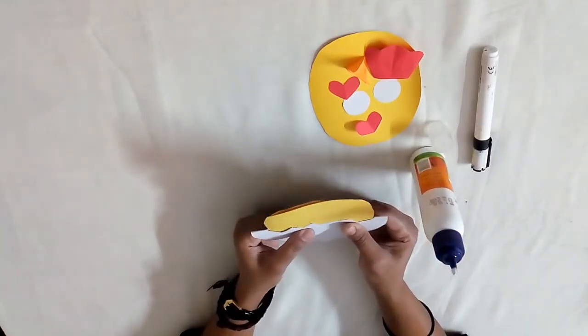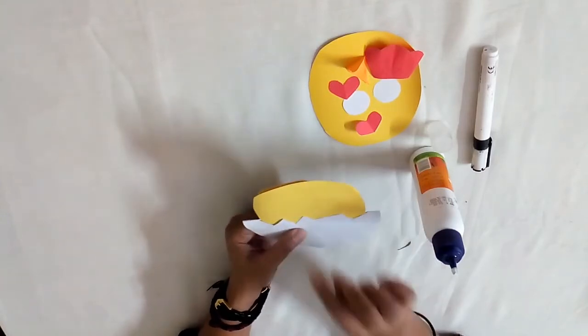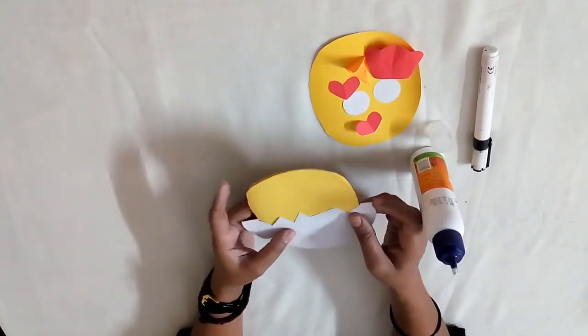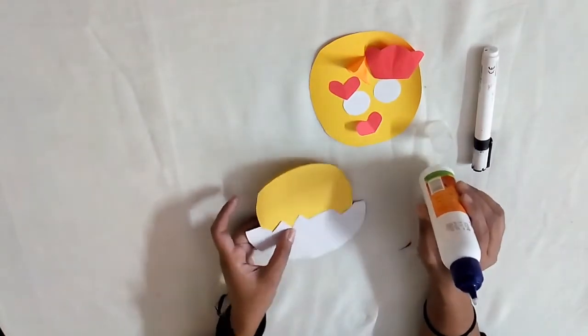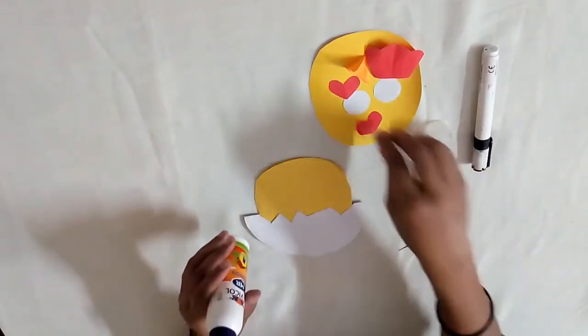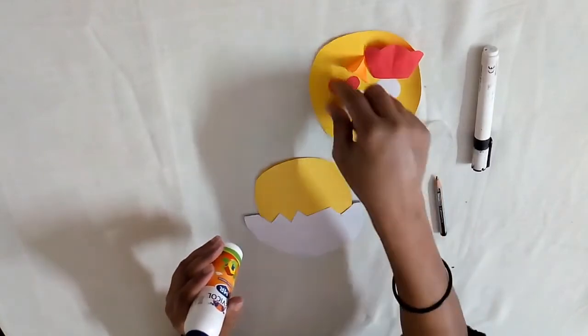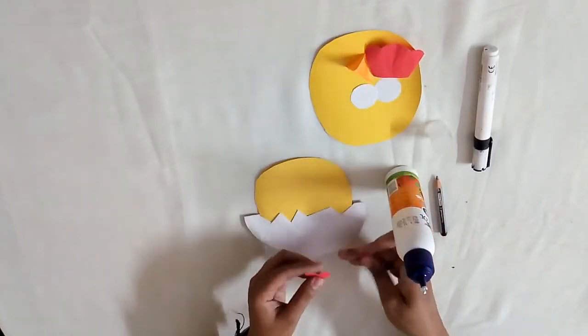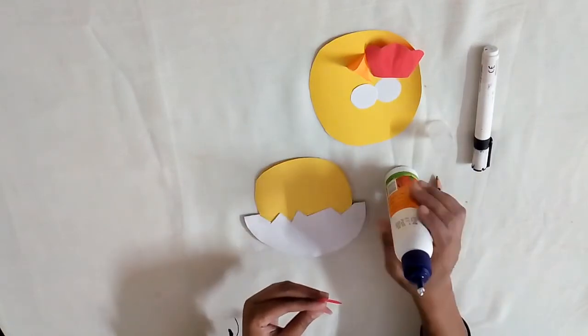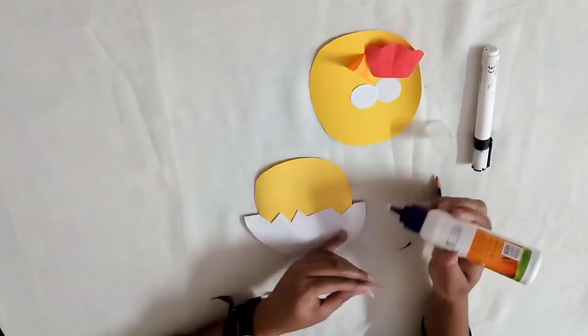This makes it look like the chick popping out from the broken egg. Now take two red heart shaped paper of similar size and stick them on the opposite edges of the head. Make sure the pointed edge is stuck inwards.